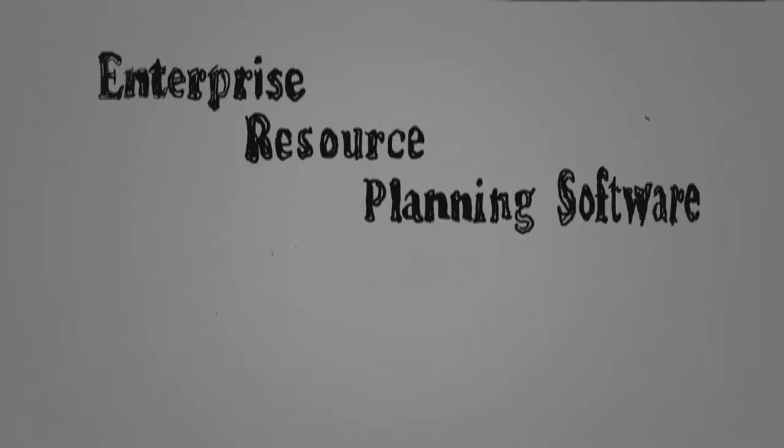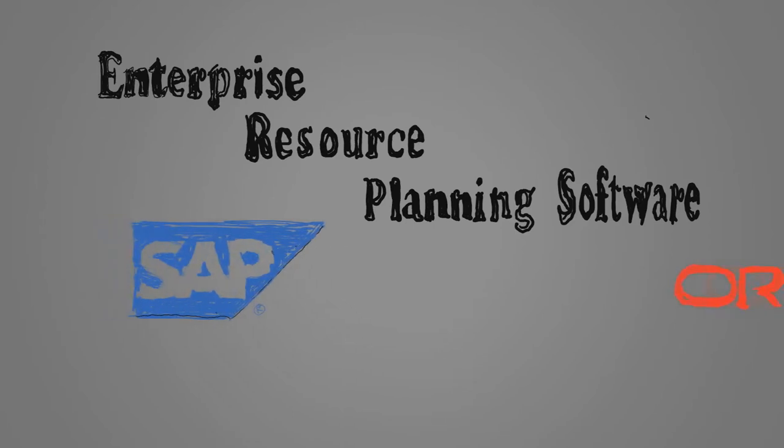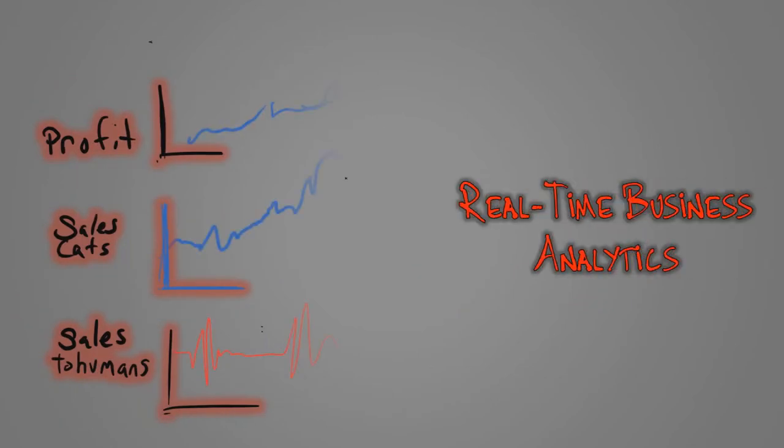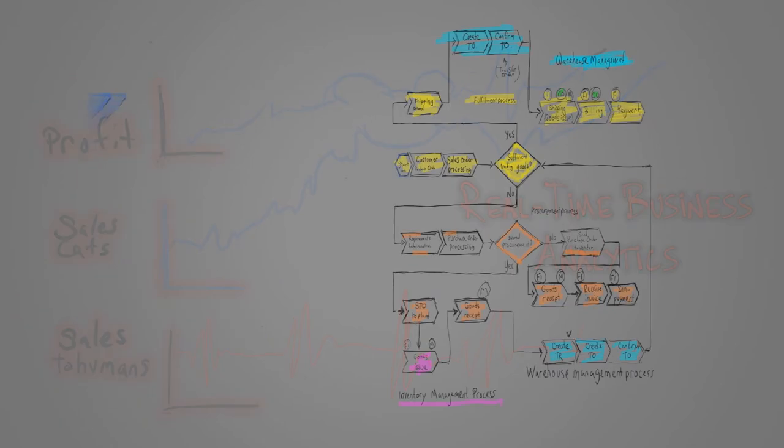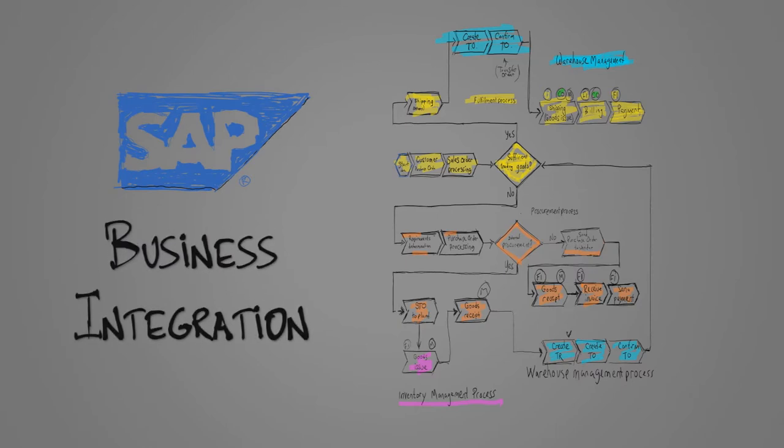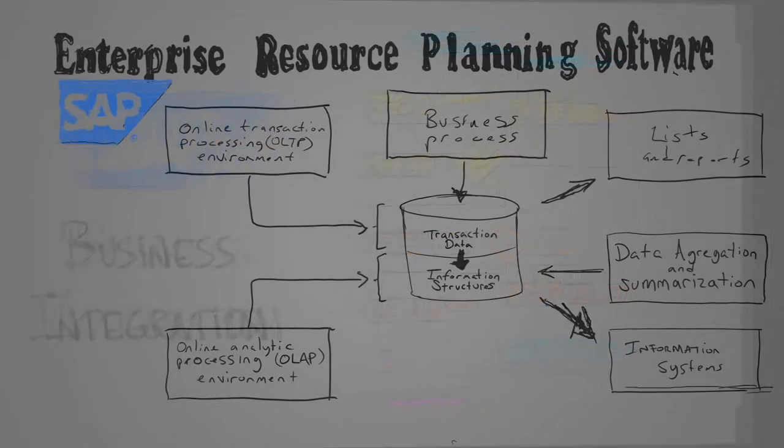So you choose an enterprise resource planning software such as SAP, Oracle, or Microsoft Dynamics, which helps you see the big picture, giving you real-time data. Because a paper system is so last century, an ERP system assists in process integration. Basically, it's a giant database which tracks and guides the flow of steps, documents, and data.